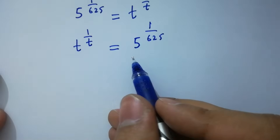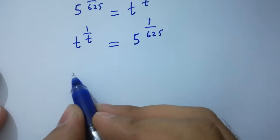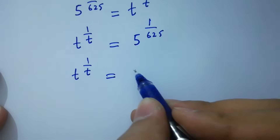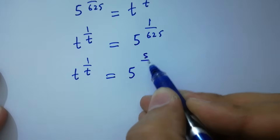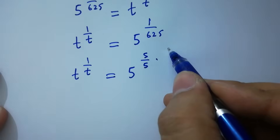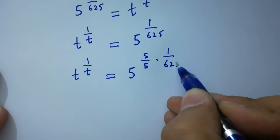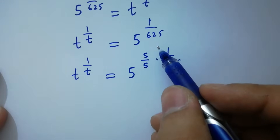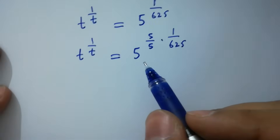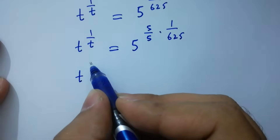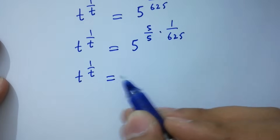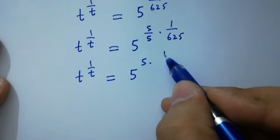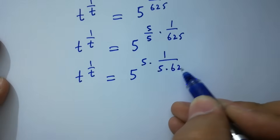This step is the same as t to the power 1 over t equals 5 to the power 5 over 5, times 1 over 625. Simplifying the exponent on the right-hand side: 1 over 5 times 625.